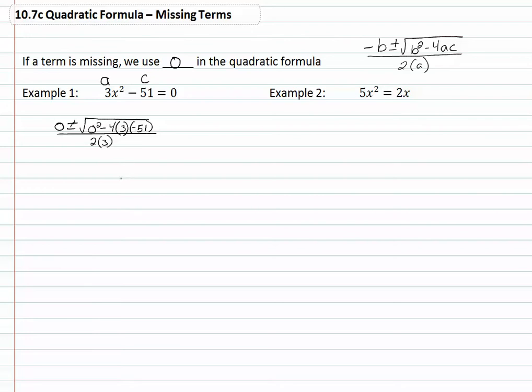Simplifying what's inside the radical and dropping our zero because adding it to anything doesn't make any difference, we get plus or minus the square root of 612 all over 6.